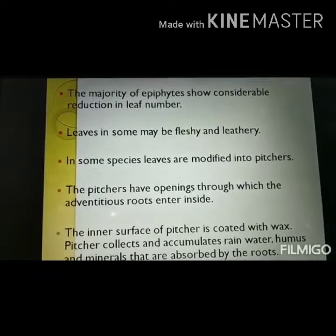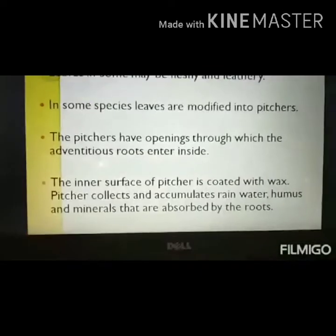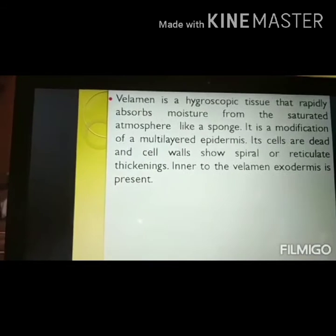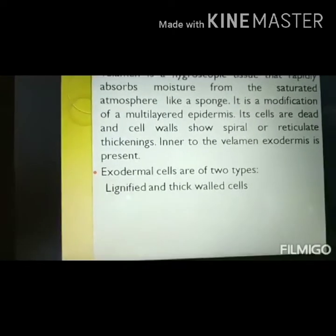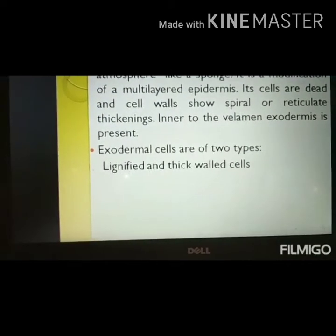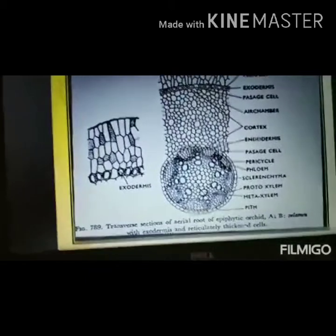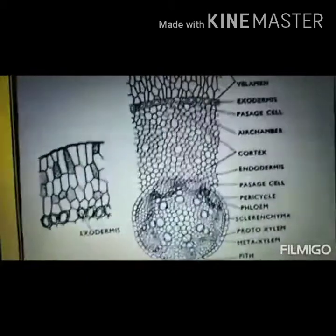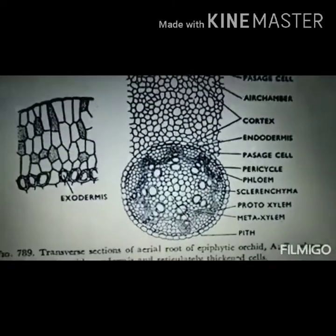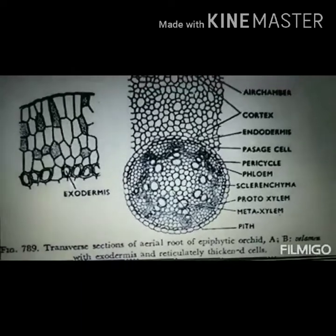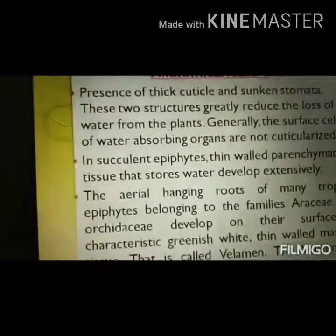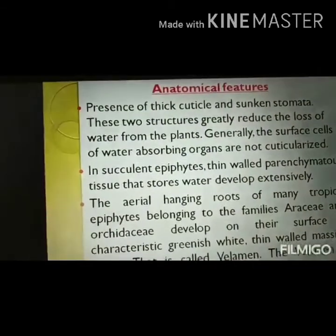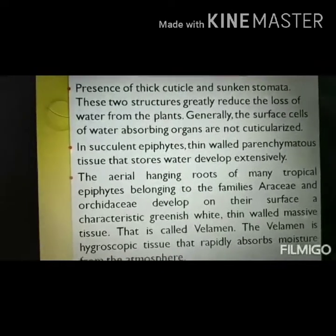Leaves of epiphytes are fleshy and leathery in nature, highly thickened to adopt some xerophytic conditions. Velamen tissue is hygroscopic and helps absorb moisture from the atmosphere. Exodermal cells are thick-walled and lignified. The transverse section of epiphytic roots shows contact tissue, aerenchyma cells, and the arrangement of protoxylem and metaxylem. Other anatomical features include a well-developed cuticle, sunken stomata, and a succulent-like appearance.